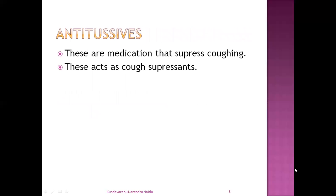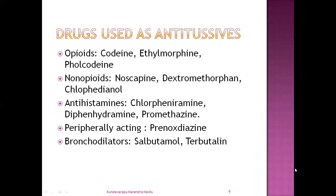And the next one is antitussives. Antitussives are medications which suppress the cough — these are called cough suppressants. The drugs used as antitussives are mainly opioids: codeine, ethylmorphine, and pholcodine. Non-opioids: noscapine, dextromethorphan, and clofenadol. Antihistamine class: chlorpheniramine, diphenhydramine, and promethazine. A peripherally acting drug: prenoxdiazine. And bronchodilators: salbutamol and terbutaline.